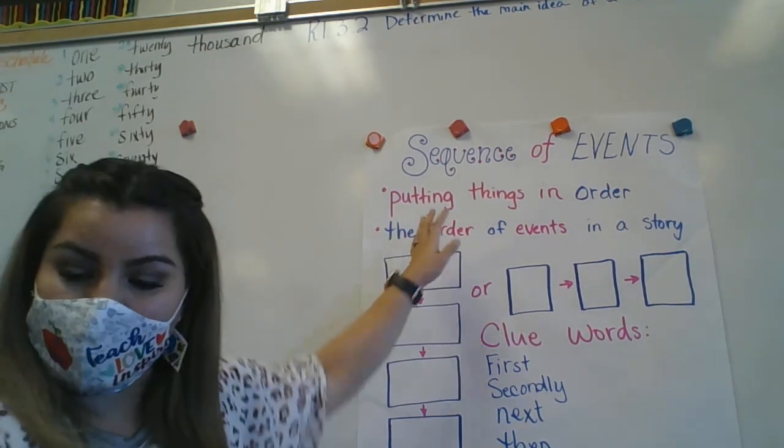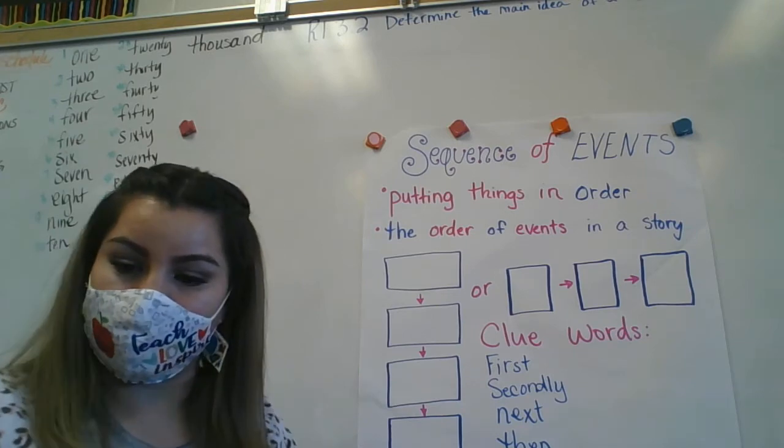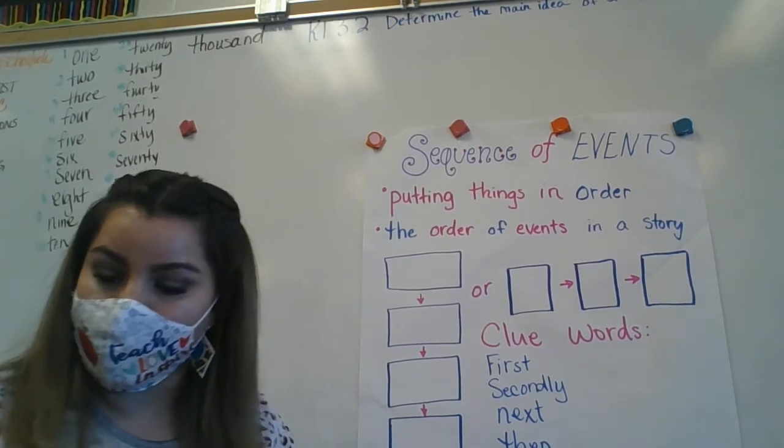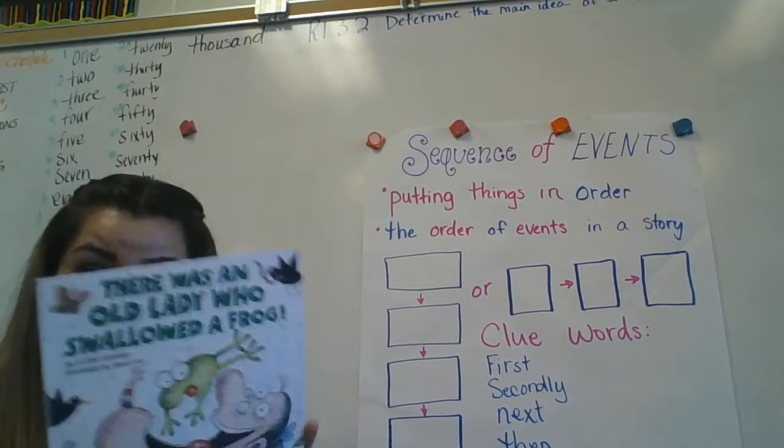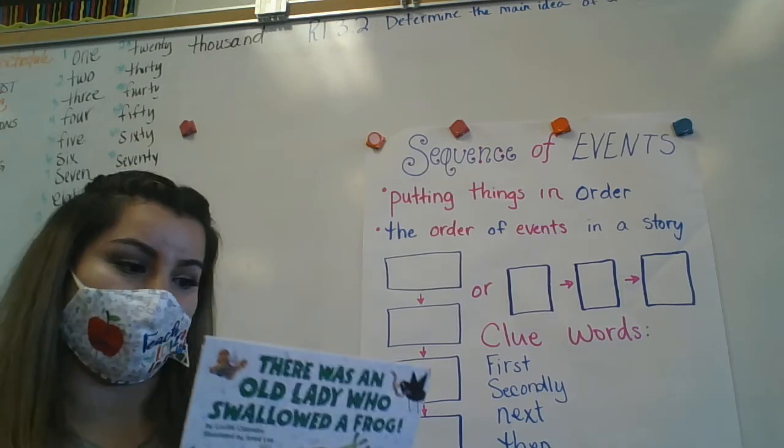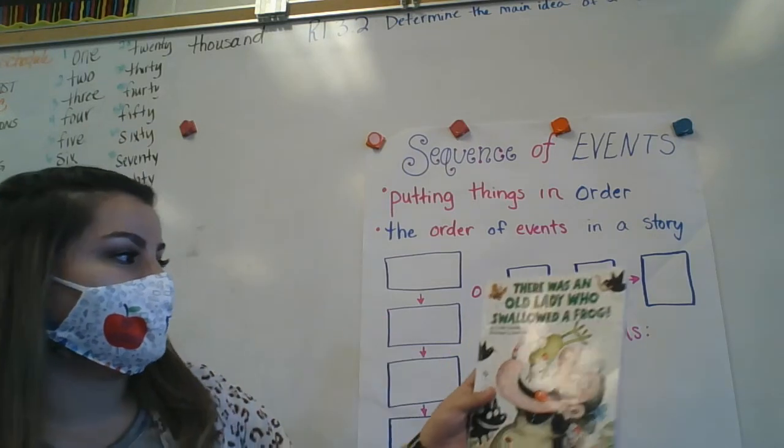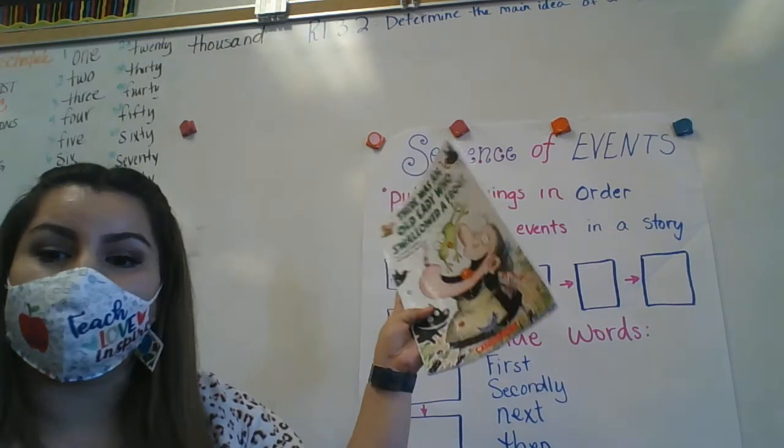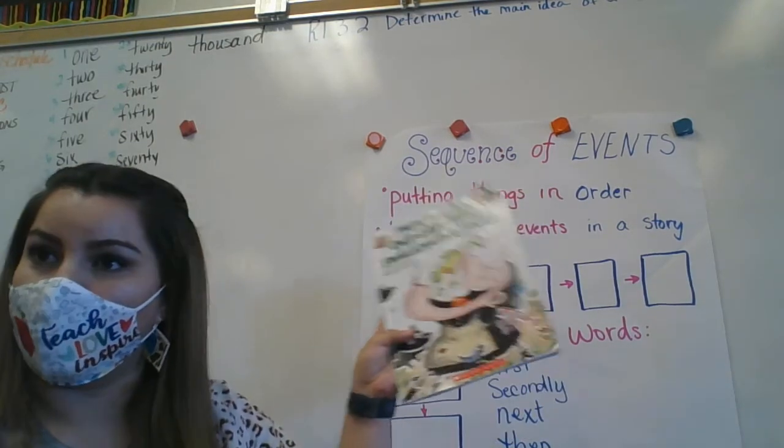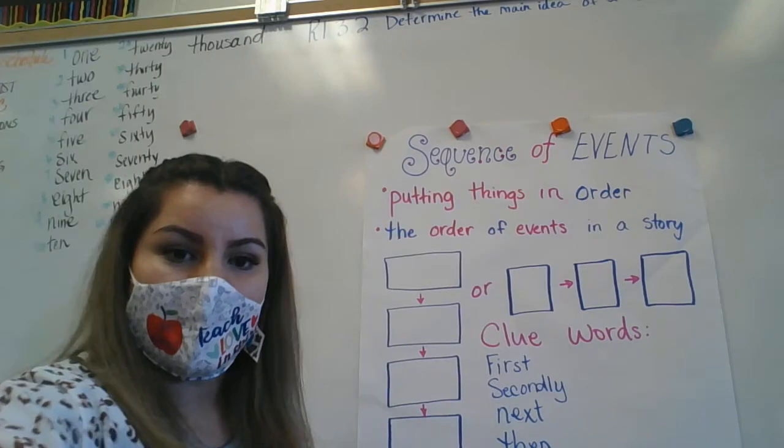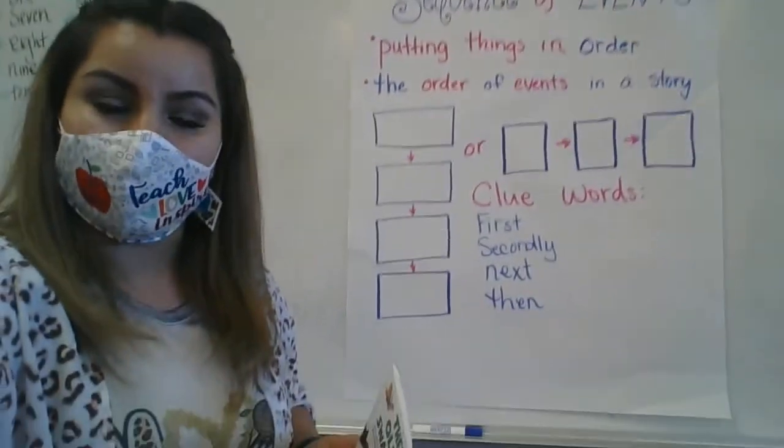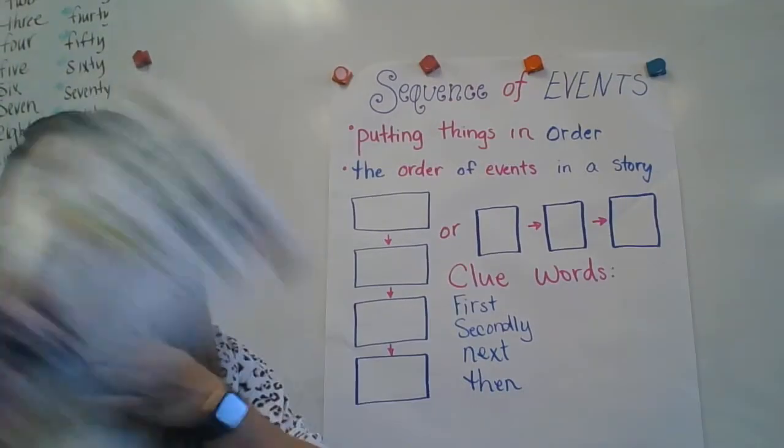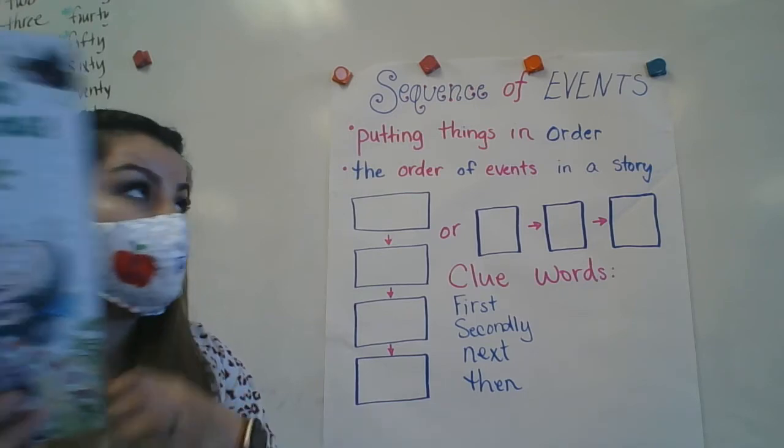So that is a sequence of events. So the story that we are going to read, and some of you might have heard of it already or read it, there was an old lady who swallowed a frog. Raise your hand if you've read the story before or know of it. Good.